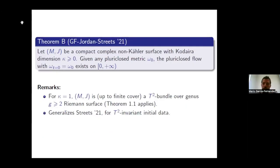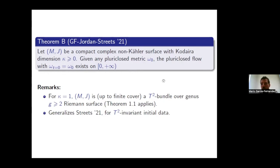The second theorem, also joint with Streets and Jordan: if we have a compact non-Kähler complex surface with non-negative Kodaira dimension, then given any initial pluriclosed metric ω₀, the pluriclosed flow with this initial condition exists for all time. We cannot yet prove convergence, but global existence holds. For Kodaira dimension one — precisely the T²-bundles over hyperbolic surfaces — Streets proved this assuming T²-symmetry, whereas here we prove it for arbitrary initial pluriclosed data.